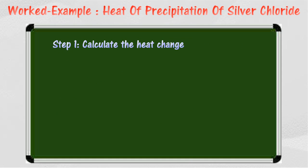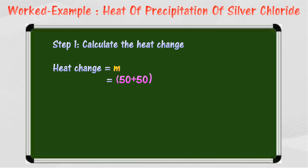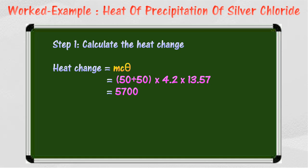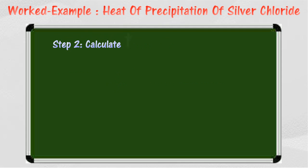The first step is to calculate the heat change using the formula Q = mcΔθ, where m is the total mass of solution (hydrochloric acid solution plus sodium hydroxide solution), c is the specific heat capacity of the solution which equals 4.2, and θ is the temperature change. In this example, the heat change is 5,700 joules.